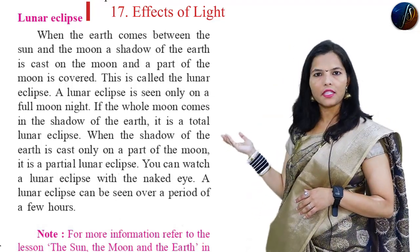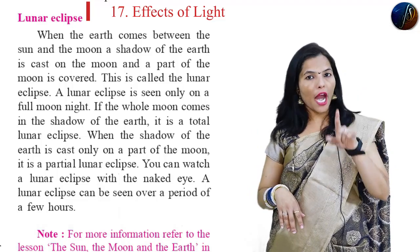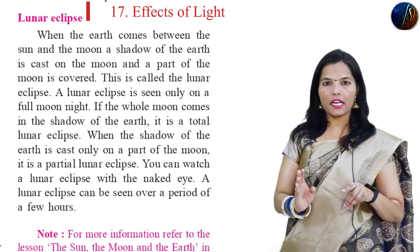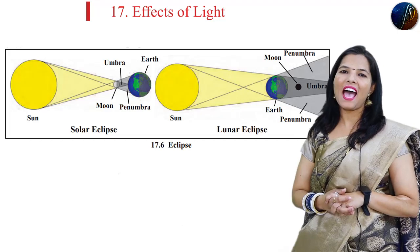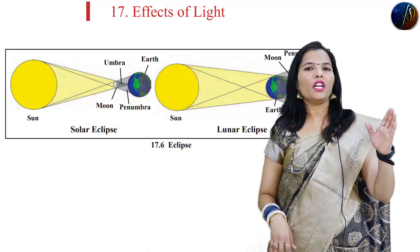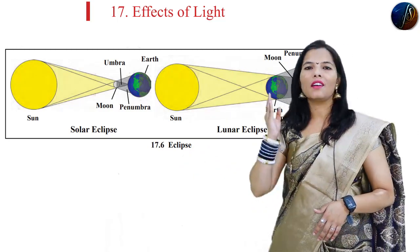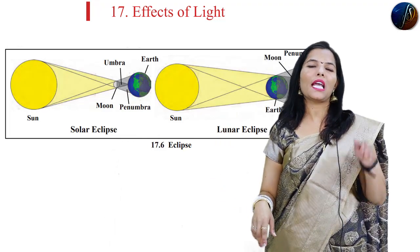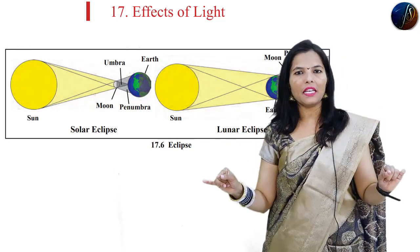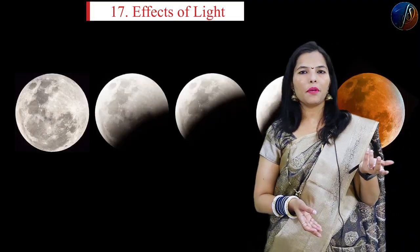Once again I repeat. That is when the Earth comes between the Sun and the Moon, and the shadow of Earth falls on the Moon, and a part of the Moon gets covered, this condition is called as the lunar eclipse. When the Sun, the Earth, and the Moon come in a straight line, and the shadow of Earth falls on the Moon, this condition is called as the lunar eclipse. In Marathi, this is called Chandra Grahan.